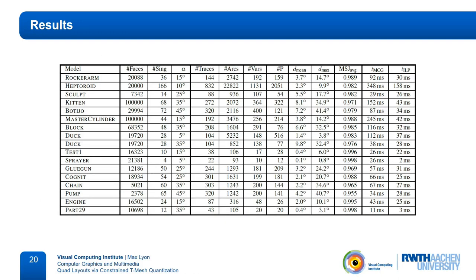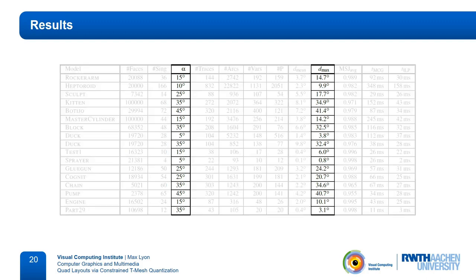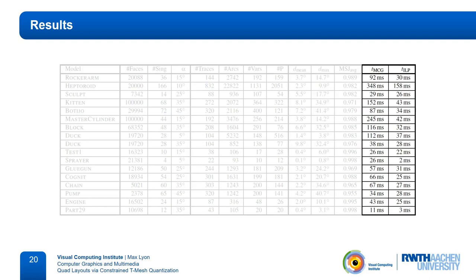Here are some statistics on these results. This is too much to go through completely, so let me just point out a few things. First, our experiments show that the angular bound is indeed adhered to. The left column shows the chosen parameter alpha, and the right shows the maximum deviation of the separatrix. However, while the maximum deviation is often close to the bound, the average deviation typically stays a lot lower. The other thing I quickly want to point out is that our method is quite fast. Construction of the t-mesh and solving the integer linear program takes less than half a second on a typical model.